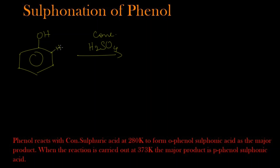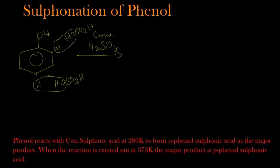In the mixture, one hydrogen will be at the ortho position and one hydrogen at the para position. We are writing sulfuric acid as HOSO₃H. This hydrogen and this OH group interact — if this happens at the ortho position, we get the ortho product with an OH and SO₃H group.